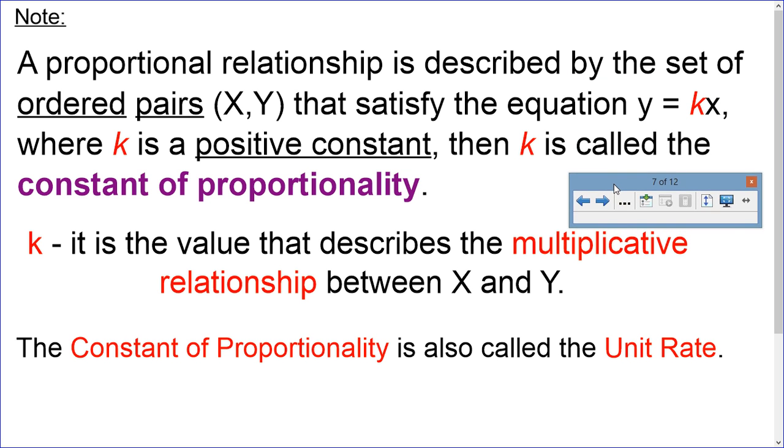A proportional relationship is described by the set of ordered pairs (x, y) that satisfy the equation y equals kx. Where k is a positive constant, then k is called the constant of proportionality.